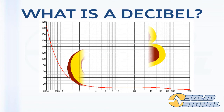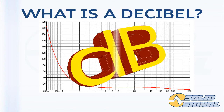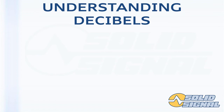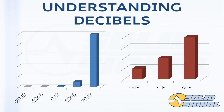Decibels, abbreviated dB, measure the difference when compared to something. When a sound is 80 decibels, it's 80 decibels compared to complete silence. The reason decibels work out so well is because they're on a logarithmic scale. In other words, every time you add 10, you're actually multiplying by 10. So 10 dB is 10 times the power, 20 dB is 100 times the power, minus 10 dB is one-tenth the power, and minus 20 dB is one one-hundredth the power. It also works out that a 3 dB increase is about twice as much, and a 6 dB increase is about four times as much.